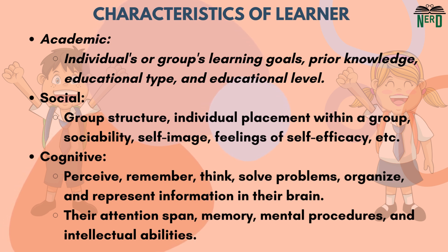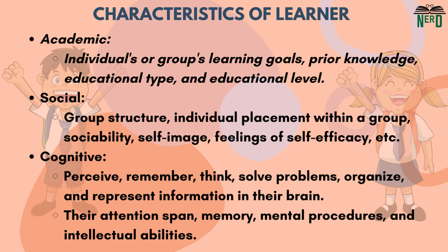Social and emotional characteristics include, among others, group structure, individual placement within a group, sociability, self-image, and feelings of self-efficacy. A learner's cognitive characteristics describe how they perceive, remember, think, solve problems, organize, and represent information in their brain, including their attention span, memory, mental procedures, and intellectual abilities.